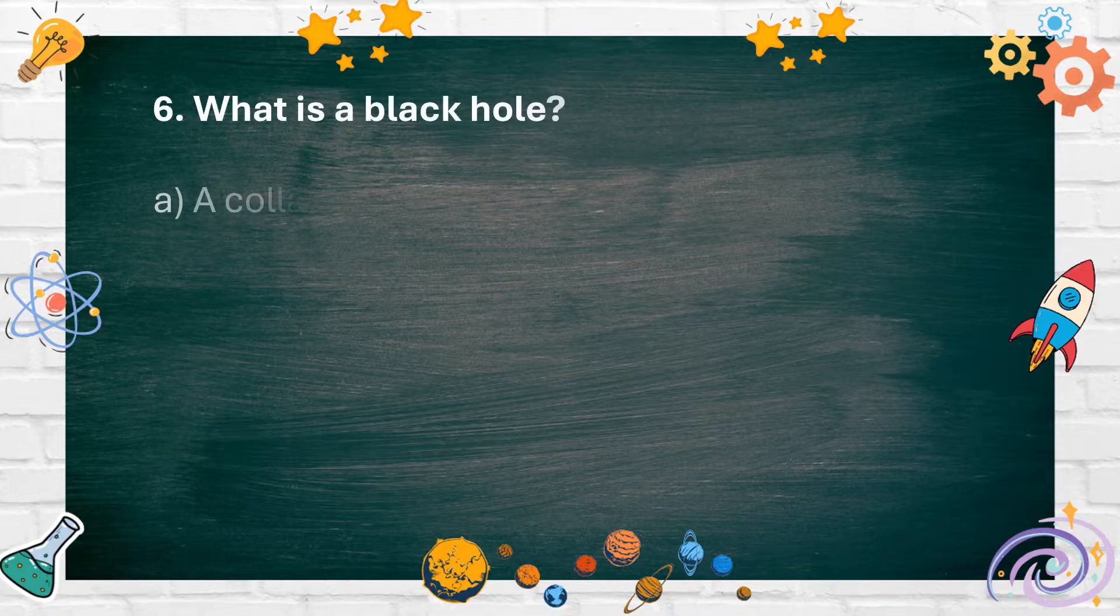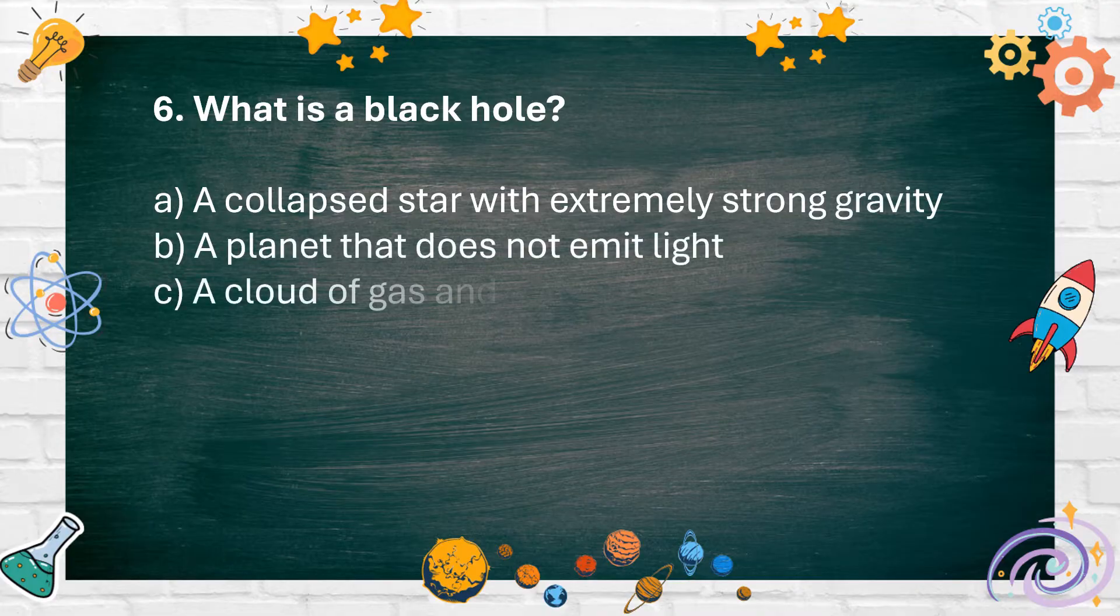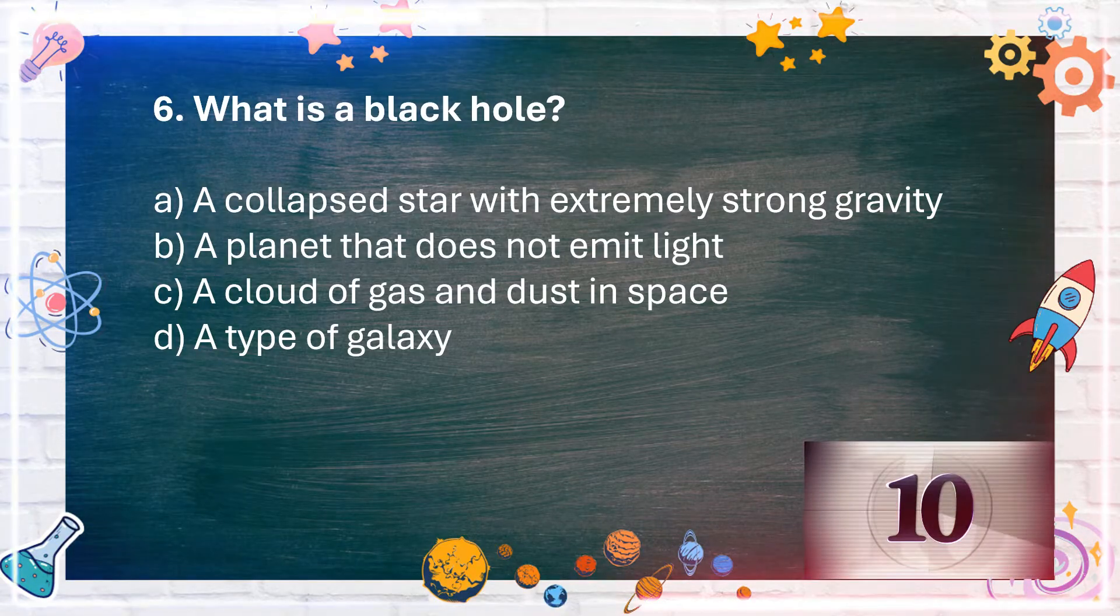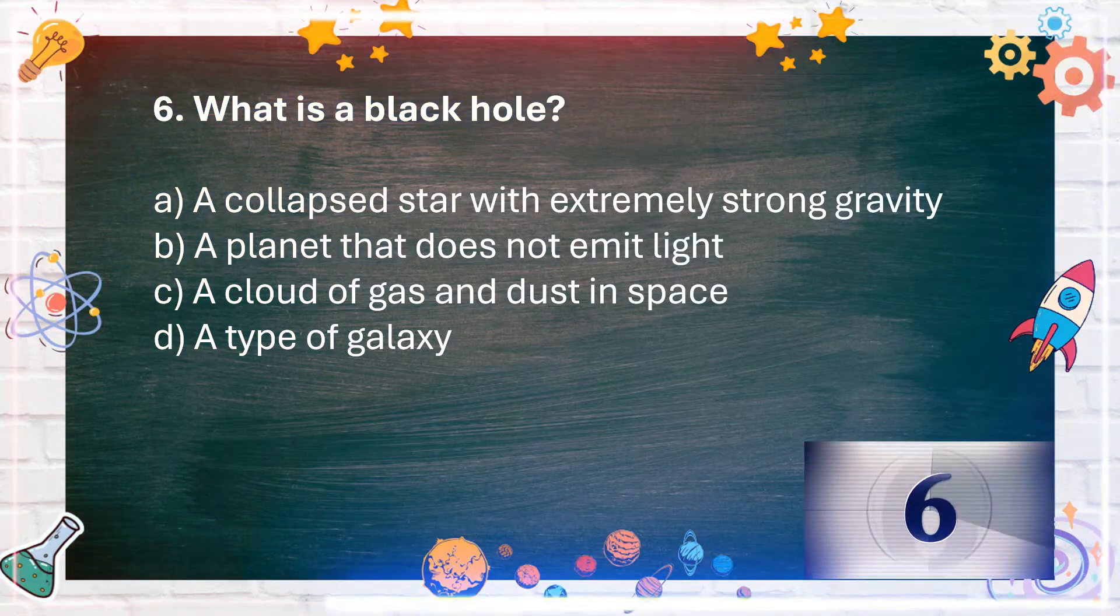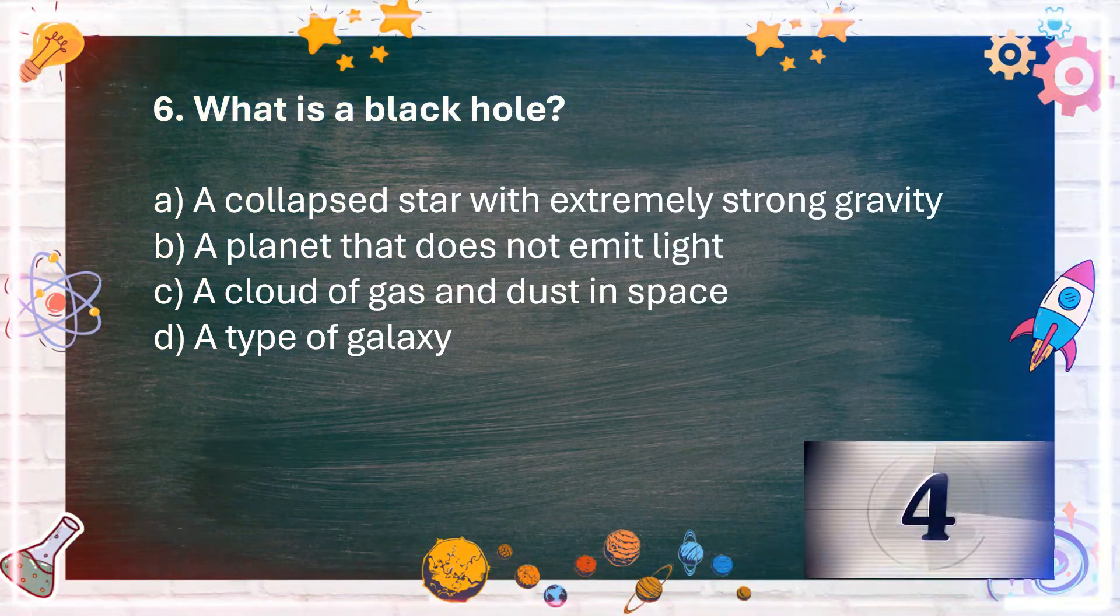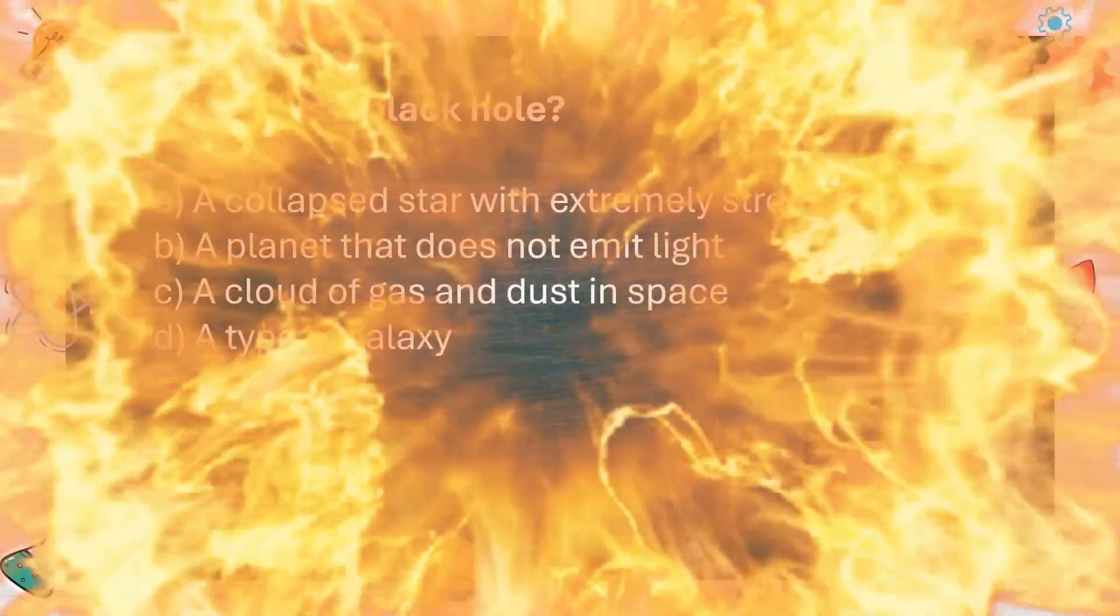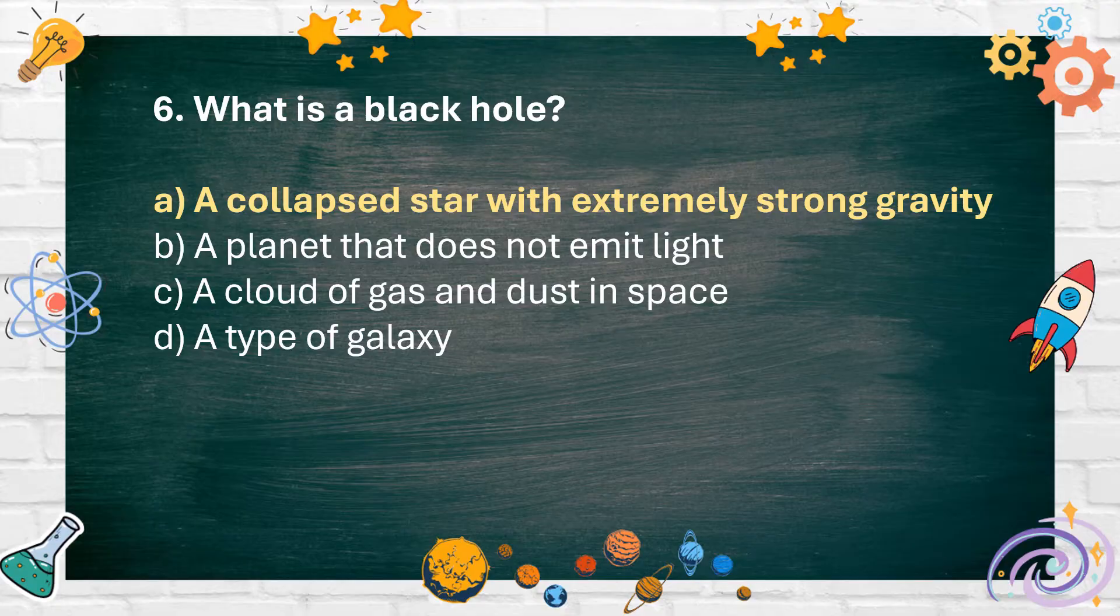Number 6: What is a black hole? A. A collapsed star with extremely strong gravity, B. A planet that does not emit light, C. A cloud of gas and dust in space, D. A type of galaxy. The answer is A. A collapsed star with extremely strong gravity.